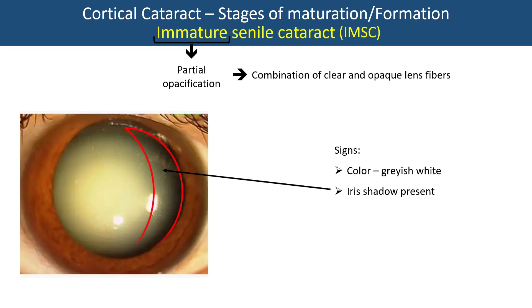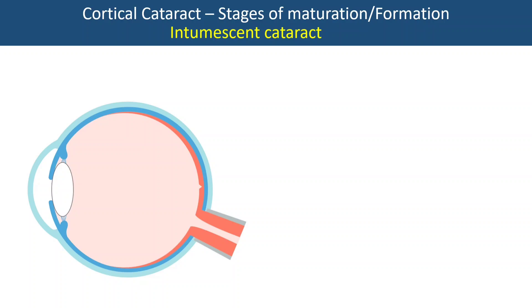Due to continuous overhydration the lens becomes swollen, increasing in size — this is called intumescent cataract, where intumescent means swollen and full of water. This is the next stage in cortical maturation and may or may not occur. If it doesn't occur, the immature cataract progresses directly to become a mature cataract.